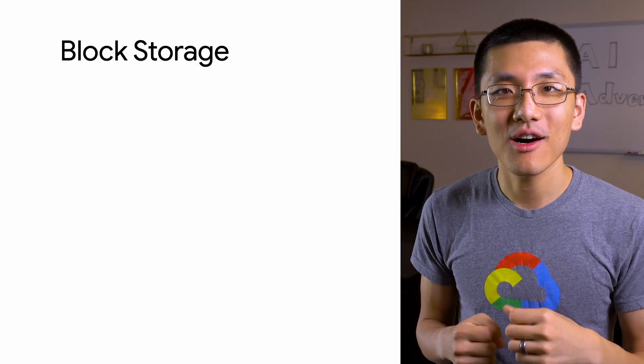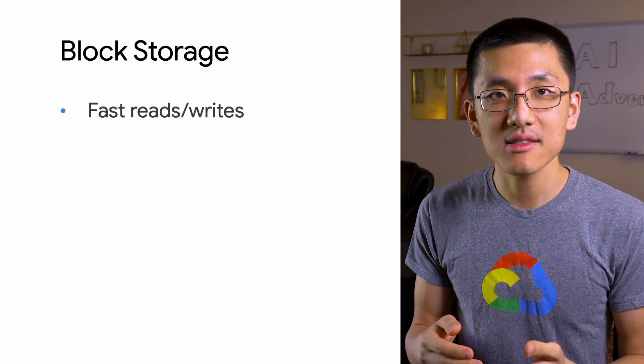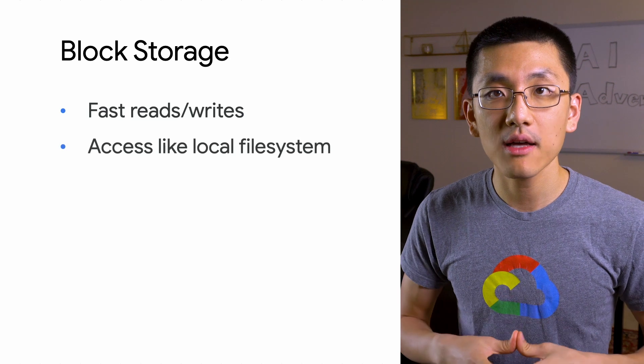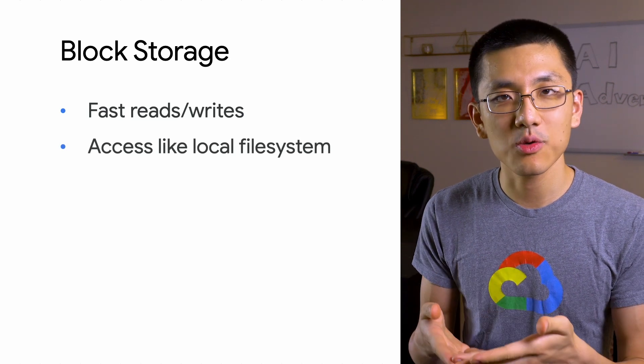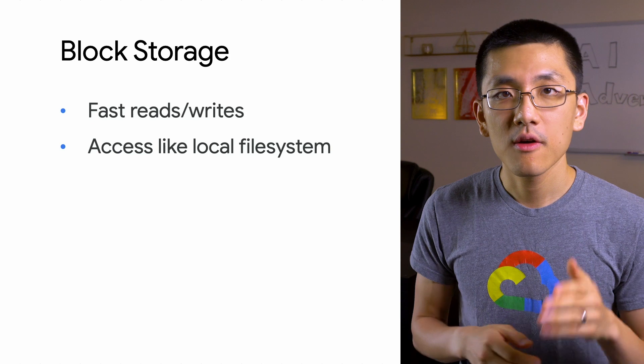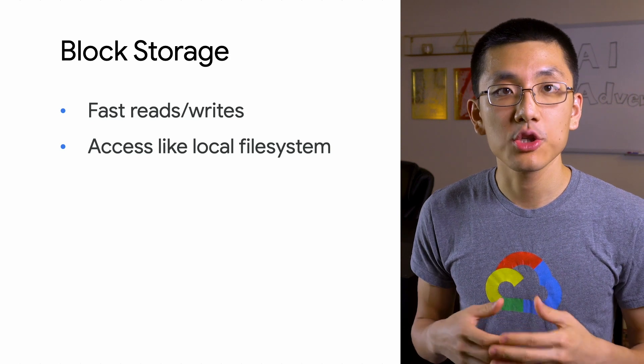But sometimes you need the performance of block storage. Enter the persistent disk. We're moving all the way down the stack to be closer to the compute resource and closer to the raw — virtualized raw hardware. These disks offer high-performance reads and writes, and your code sees it as a local file system, which can be very handy for migrating existing workflows into the cloud.